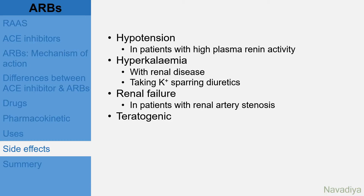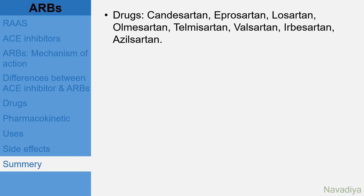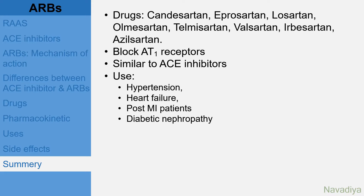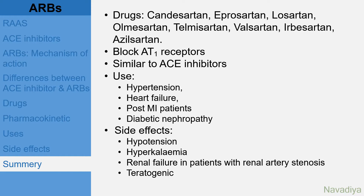So this was all about ARBs. Time for a summary. ARBs include Candesartan, Eprosartan, Losartan, Olmesartan, Telmisartan, Valsartan, Irbesartan, and Azilsartan. They block AT1 receptors. Their therapeutic profile is similar to ACE inhibitors. They are used in hypertension, heart failure, post-MI patients, and diabetic nephropathy. Side effects are hypotension, hyperkalemia, renal failure in patients with renal artery stenosis, and teratogenicity. As ARBs do not cause an increase in bradykinin levels, cough and angioedema are less common with them compared to ACE inhibitors.